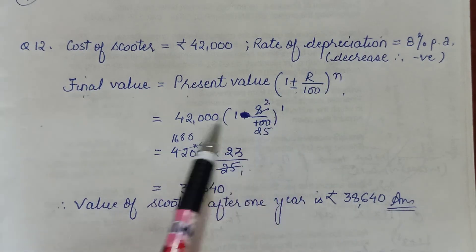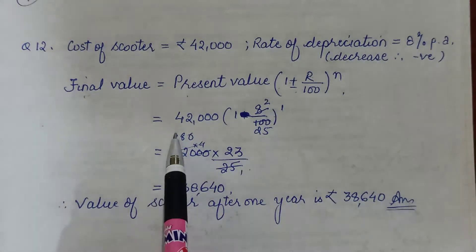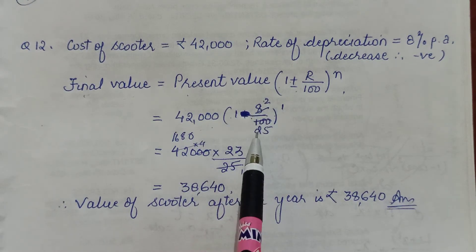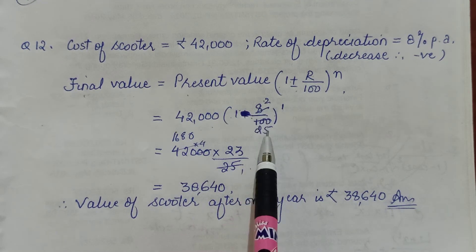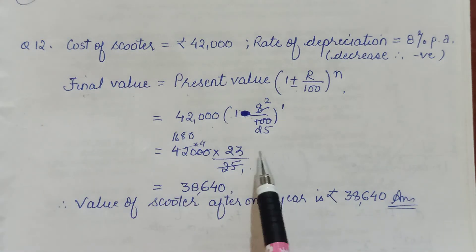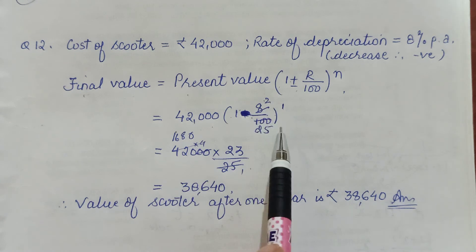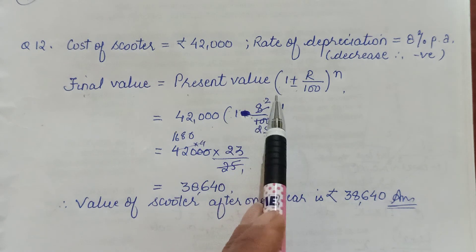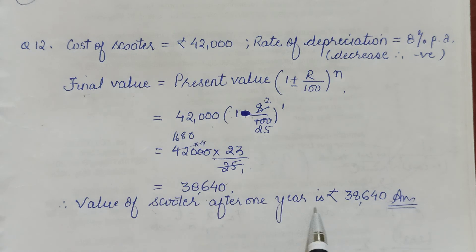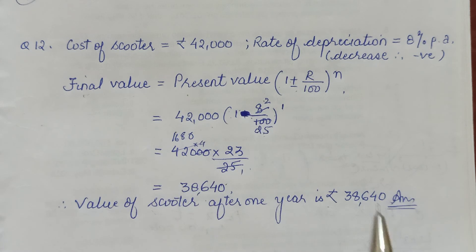Present value was ₹42,000. 1 minus 8/100 to the power of 1. That minus you have to take care of in the case of depreciation. 42's are 8, 425's are 25, minus 2, 23/25. Calculate—that's your value. It will go down by this much. This will be the value after one year.